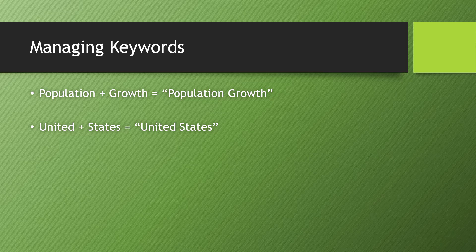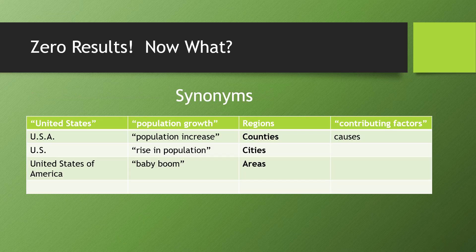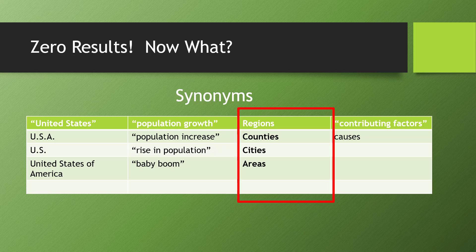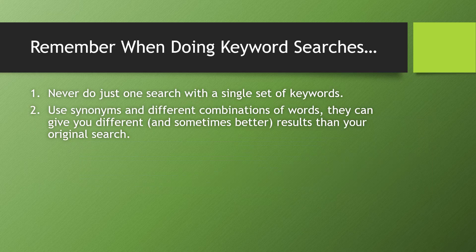What if you put in your keywords and only get a couple of results, or even nothing? Go back and look at your keywords — are these the only words you can use to describe these ideas? Probably not. Instead of 'regions,' you could use more specific terms like counties or cities, or get broader with 'areas.' These different words that mean the same or close to the same thing are called synonyms. They provide a much larger pool of keywords to draw from. Always remember to never do just one search with a single set of keywords — using synonyms and different combinations will give you different, and sometimes better, results.